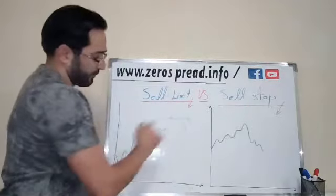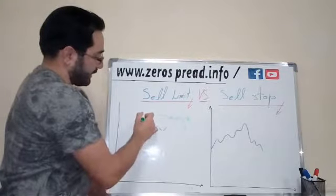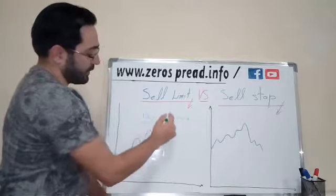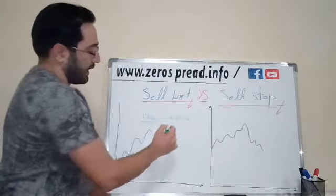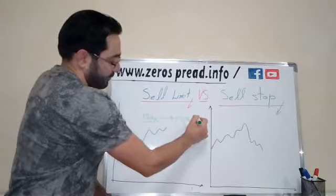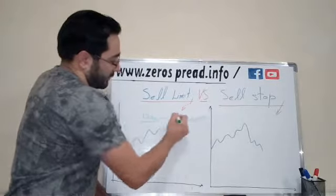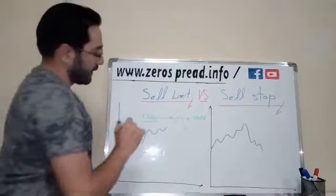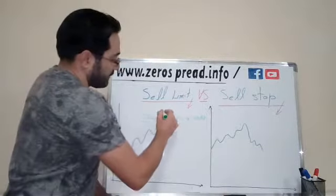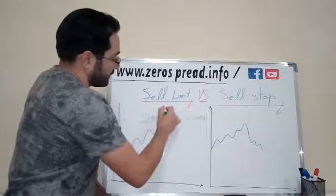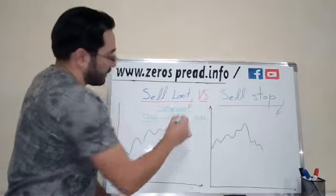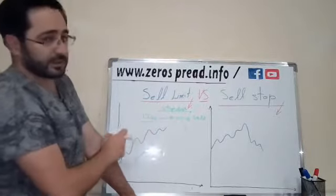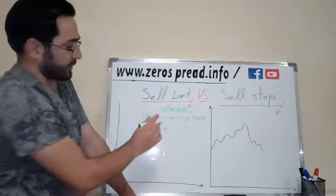For example, here the price is at 1300. When the price comes to 1300, we're going to sell there — that is the sell price. In this case, if we want to set up our stop loss, we're going to place it above that level.